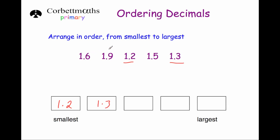We've got a 6, a 9 and a 5 remaining, so the next one is 1.5, then 1.6, and finally the largest number is the one with 9 in the tenths column, which is 1.9. And that's it.